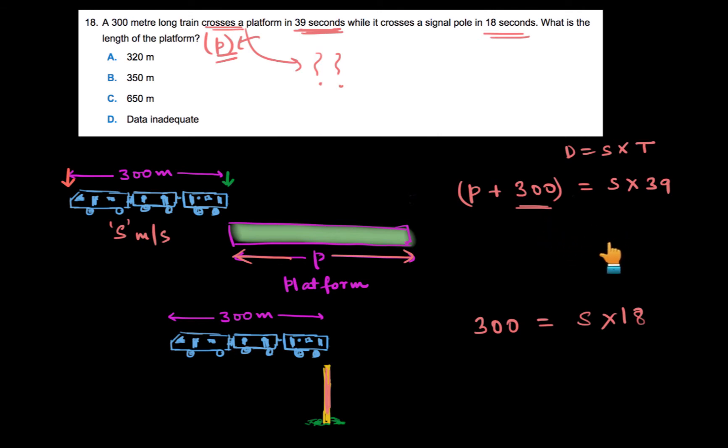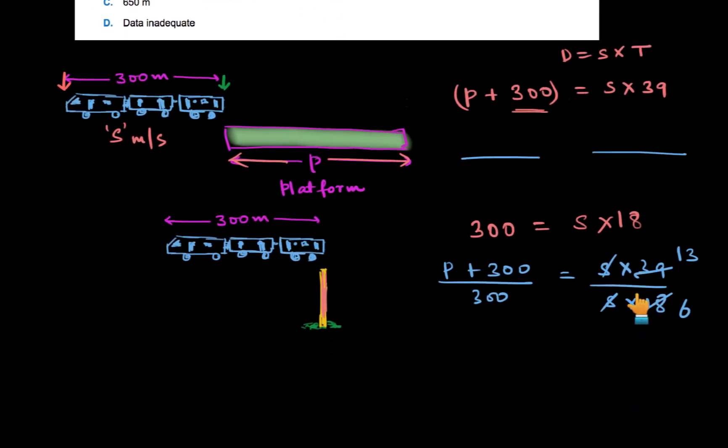One of the quickest ways to find the value of P is by dividing both of these equations. If we divide, let's say that we divided the first equation by the second one. So what do we get? P plus 300 upon 300 would become equal to s into 39 upon s into 18. s and s we can cancel out. 39 and 18 both are divisible by 3. So 3, 6 are 18, and 3, 13 are 39. So this would become 13 by 6.